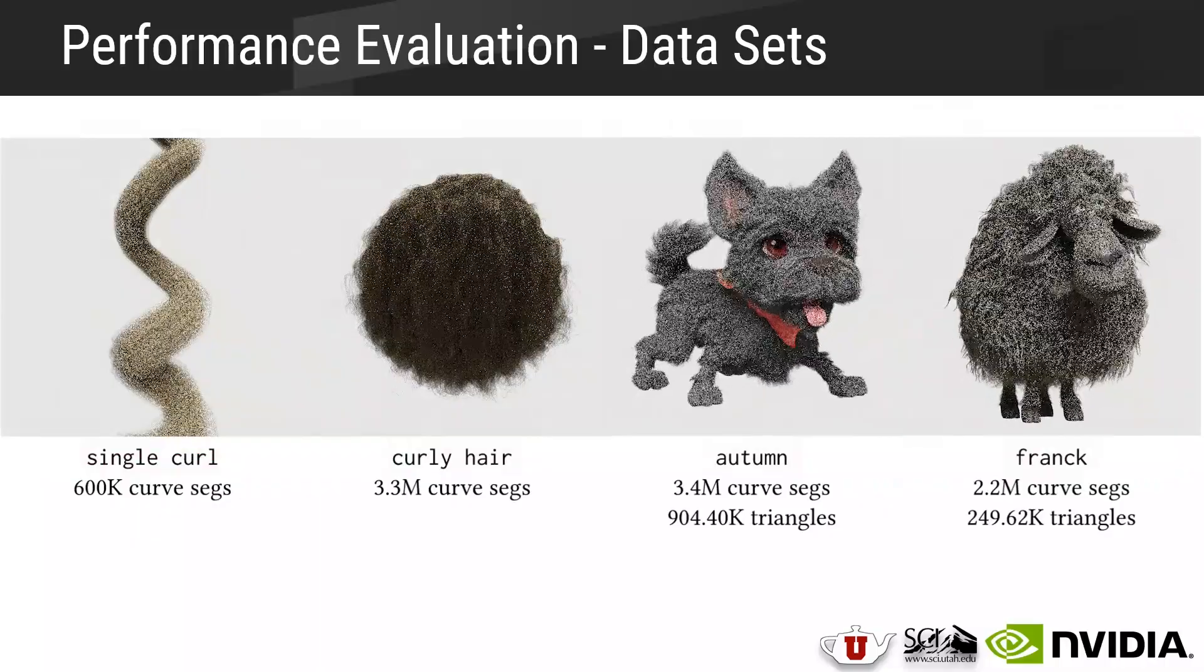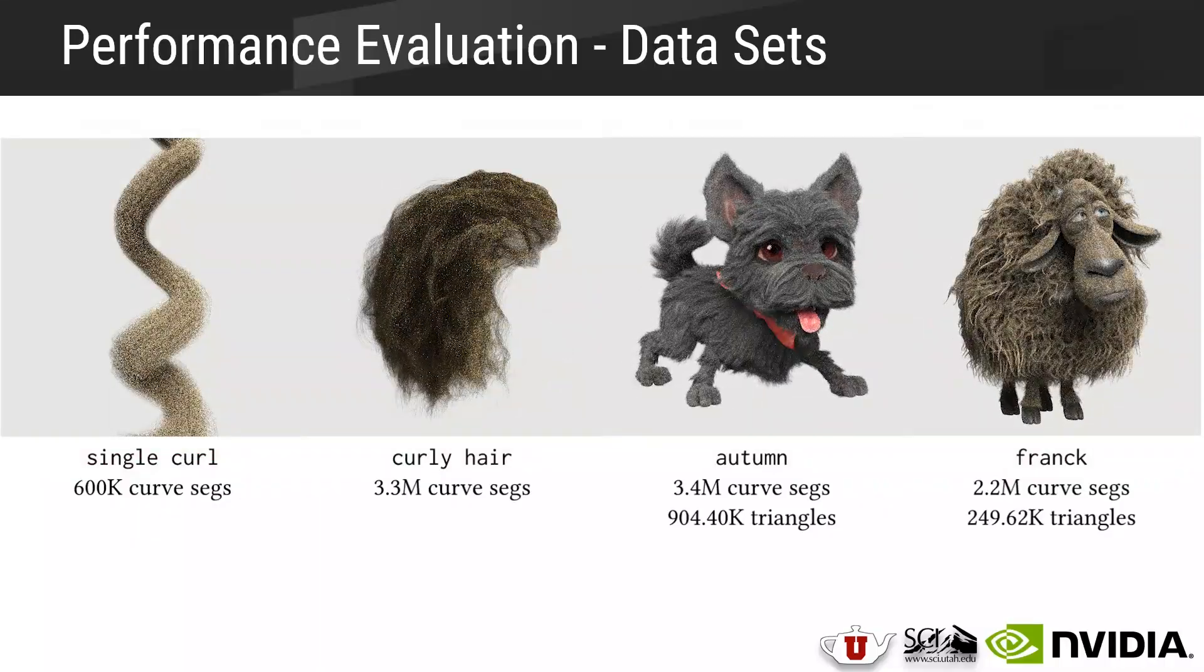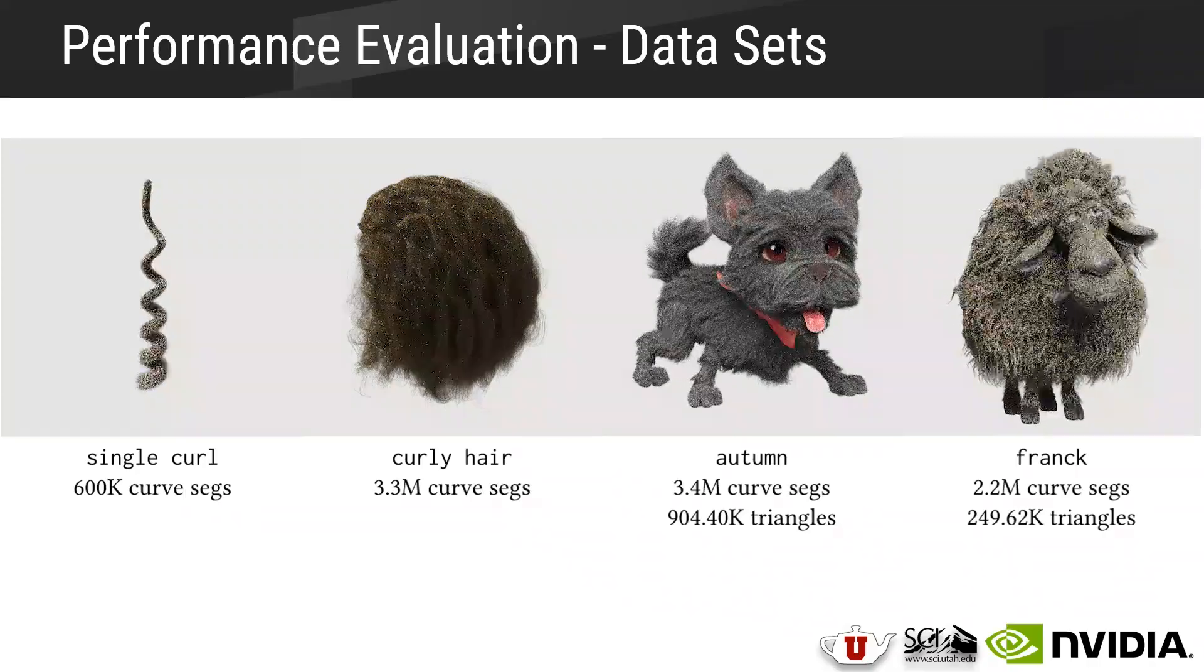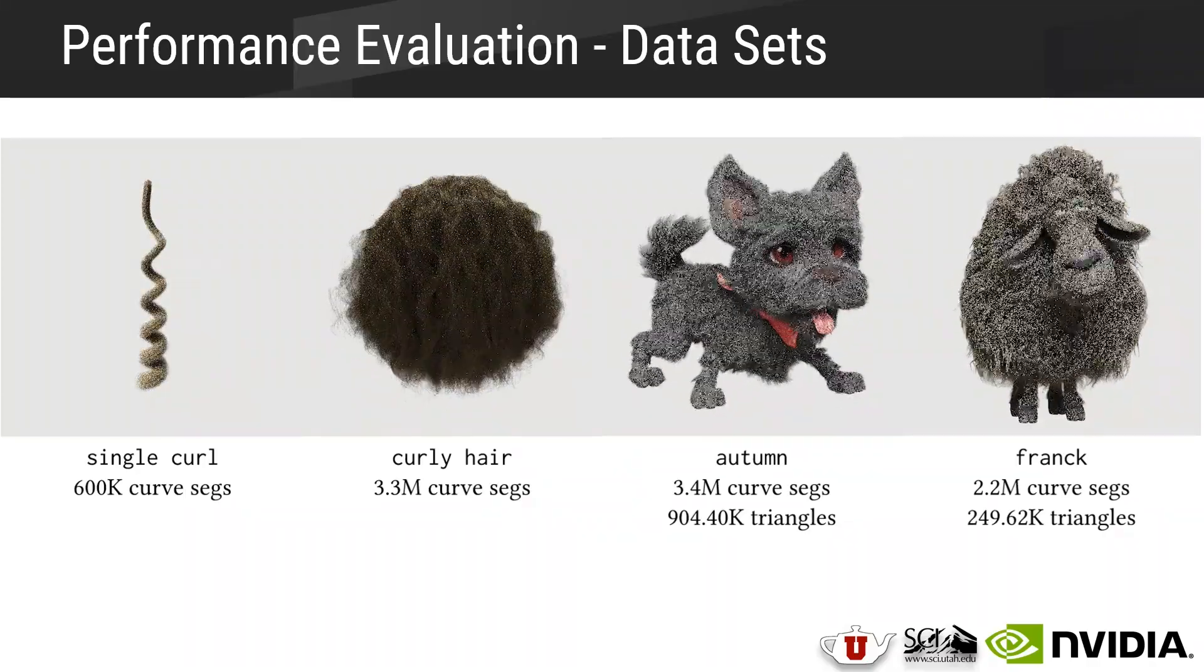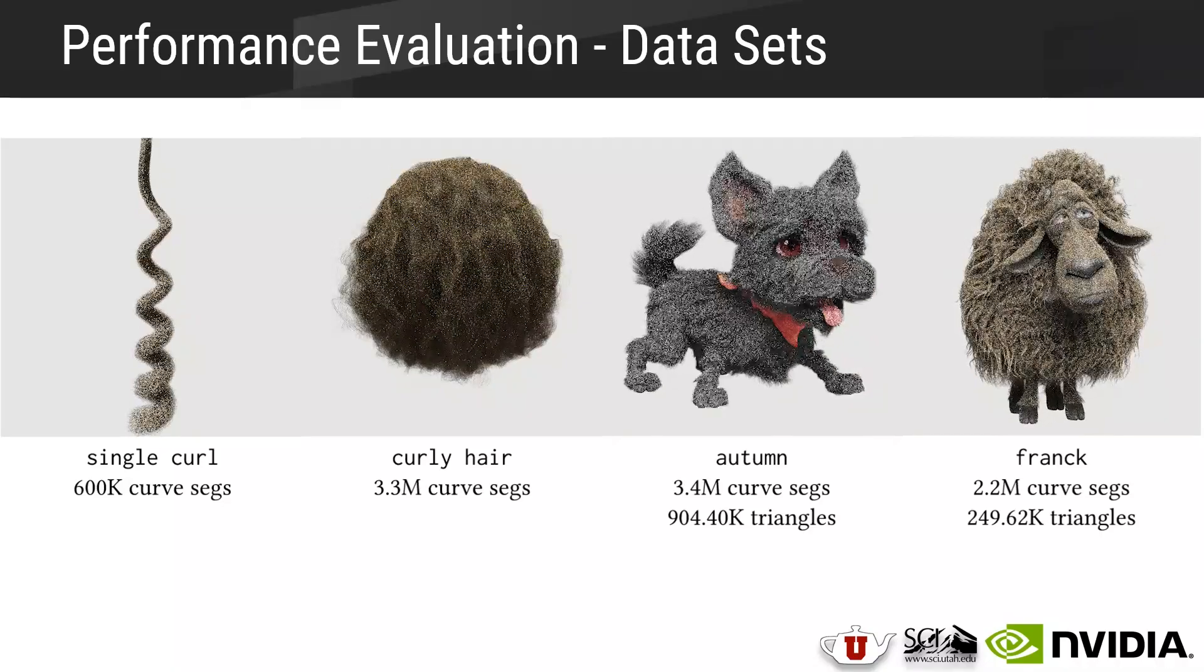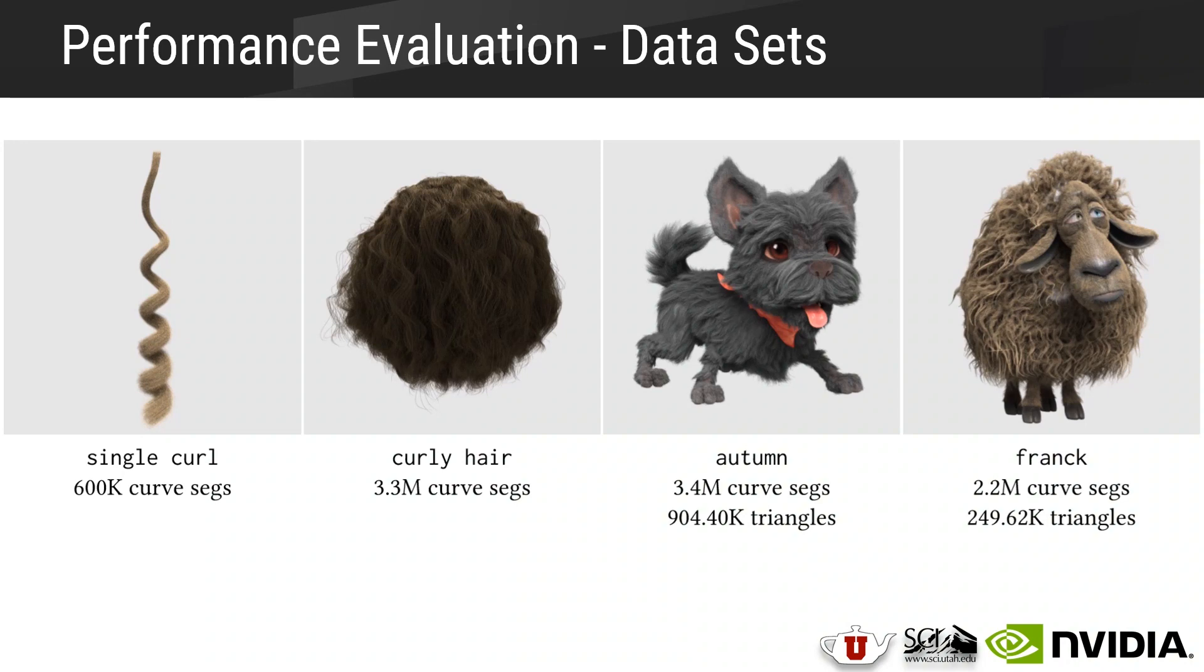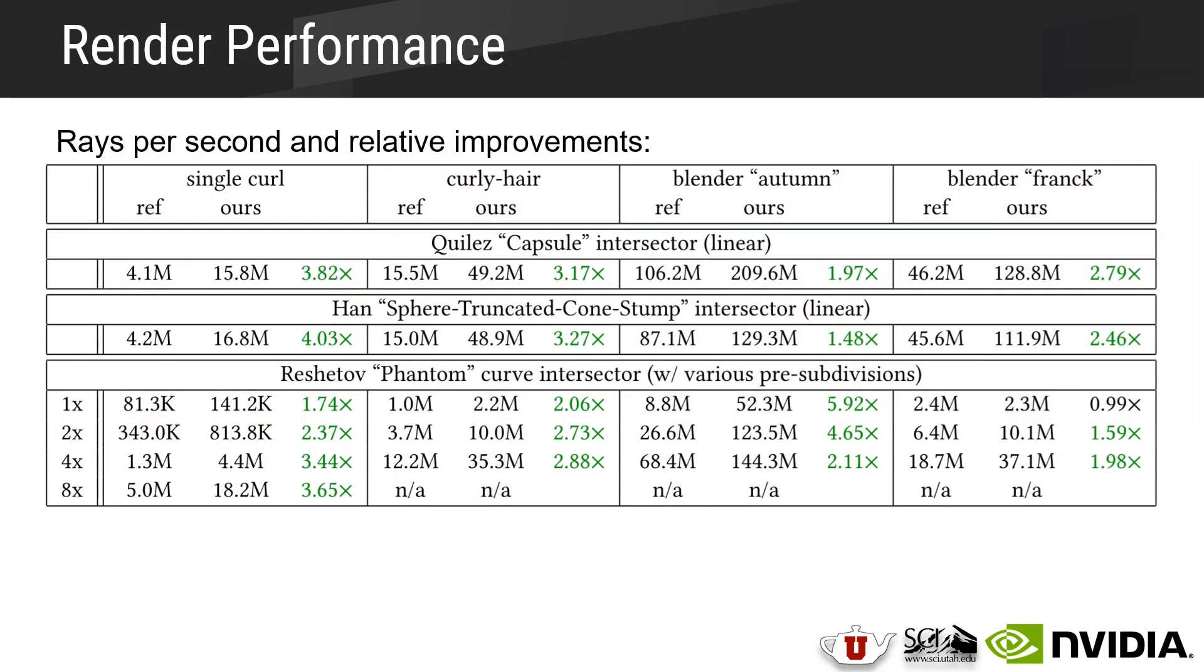For our production data sets, from left to right, we have this single curl data set from a PVRT scene, and a curly hair data set from Jem Finer-Yuxal's group. And then we have this autumn model from the Blender Movie Spring, as well as Frank from the Blender Movie Cosmos Laundromat. So for all our hair data sets, and unlike our SciVis data sets, we consistently outperform the reference method anywhere from 1.59 times to 5.92 times. In this table, different intersector types are shown from the top to bottom, and arguably the intersector that's most relevant to these data sets is the phantom curve intersector on the very bottom.